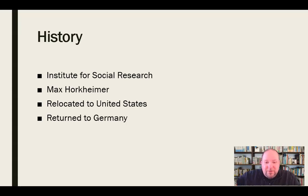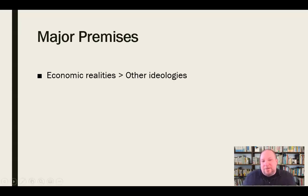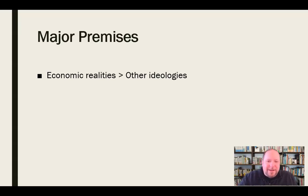Some of the major premises of Marxist critical theory and the Frankfurt School are that economic realities are greater than other ideologies. The economic realities of people outweigh political considerations and social movements. Those economic realities are the foundations of the class system, and they outweigh any other consideration. It almost comes back to Maslow's hierarchy of needs — you need to provide for lower-level needs before worrying about higher-level things. People won't be interested in politics or equality until they have economic stability.